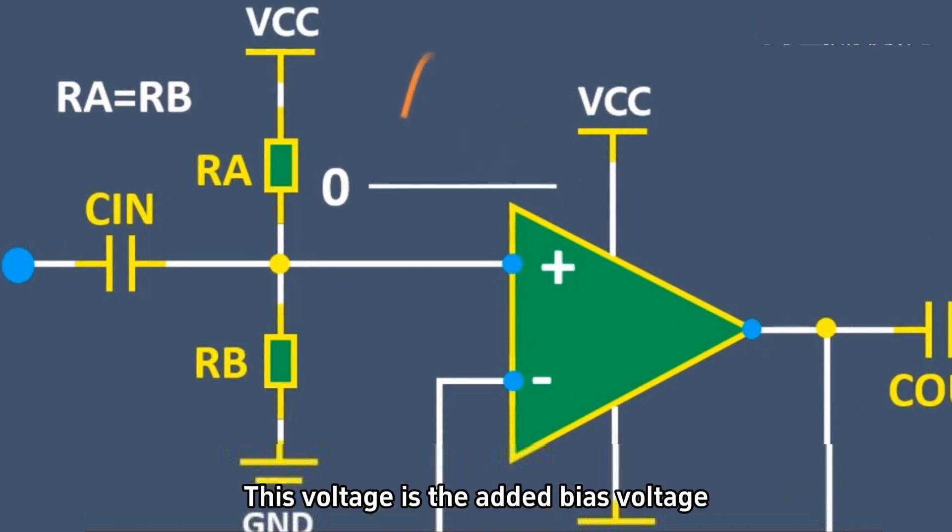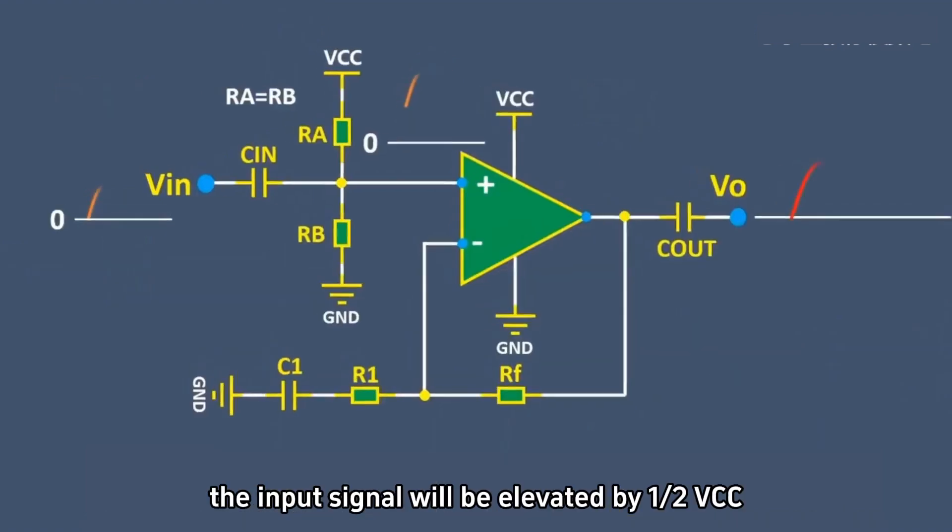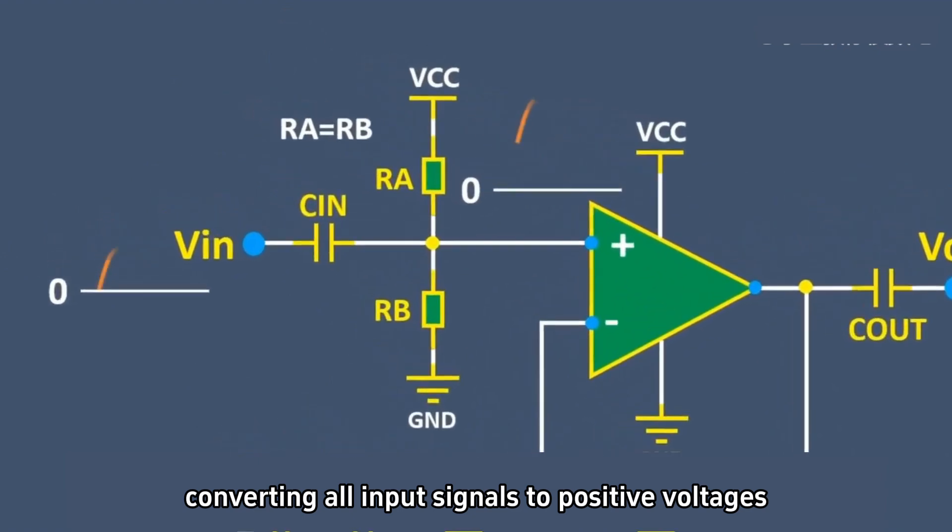This voltage is the added bias voltage. After passing through the capacitor, the input signal will be elevated by one-half Vcc, converting all input signals to positive voltages.